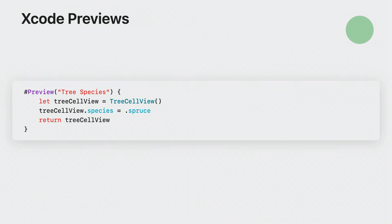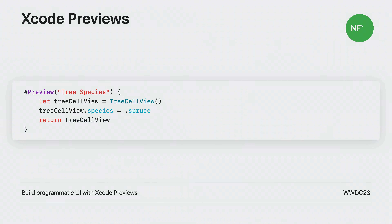With Xcode 15, you can now use previews to display your AppKit views and ViewControllers. Use the new preview macro, provide a name, and return your View or ViewController. The preview will stay up-to-date as you make changes to your code. Check out the Build Programmatic UI with Xcode Previews video for more info.